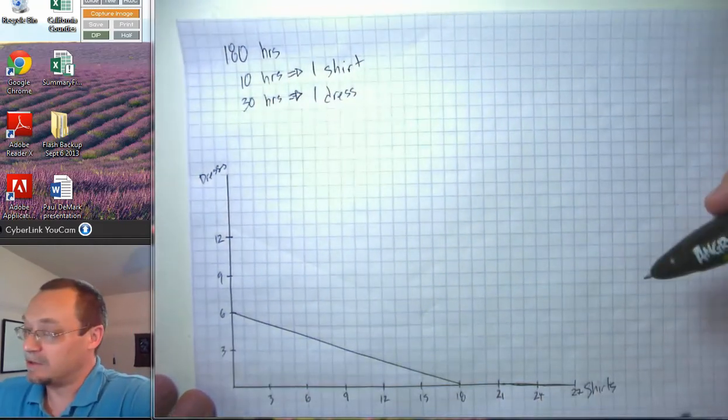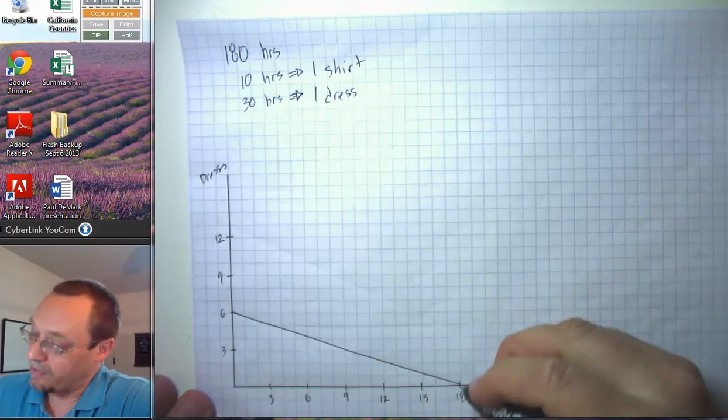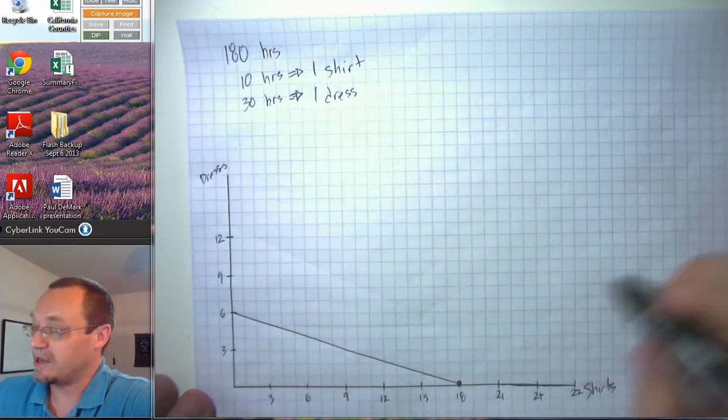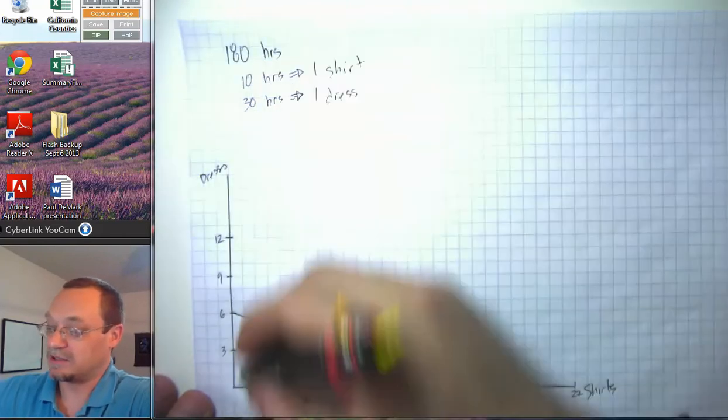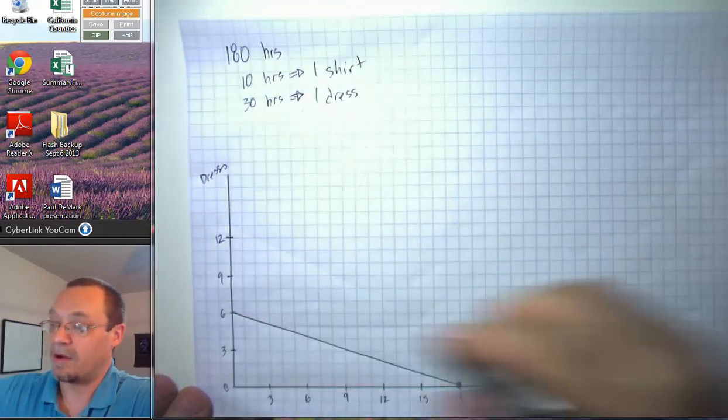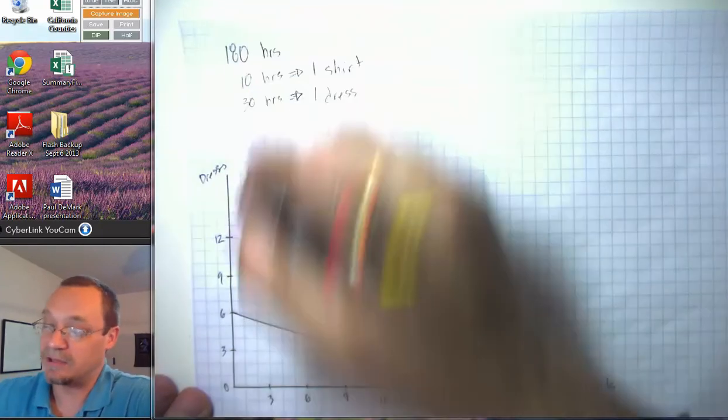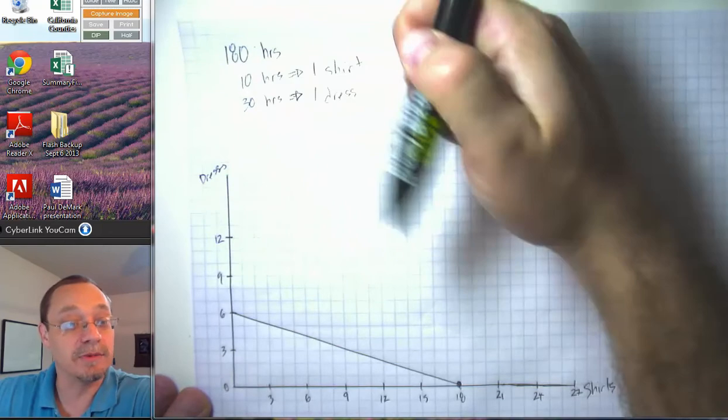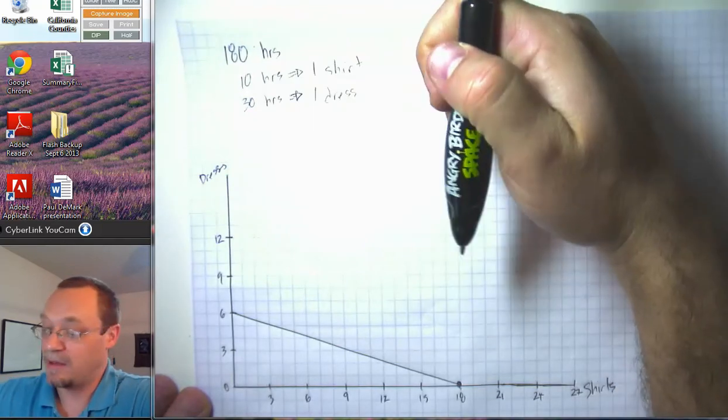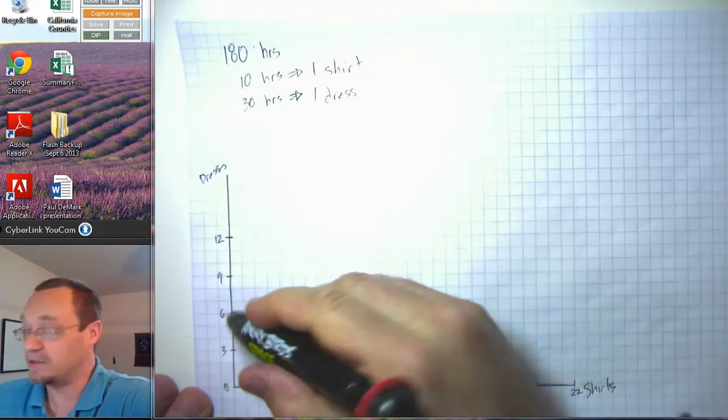And we can think about putting all of our time into shirts, in which case we get 18 shirts and zero dresses. Or we can take all of our time and put it into dresses, in which case we get 180 divided by 30 equals six dresses but zero shirts. Or any combination of those two. Let's put it 50-50 and so on.